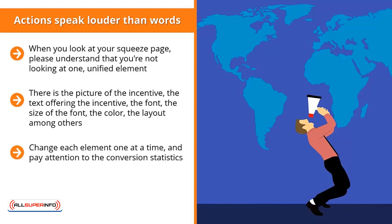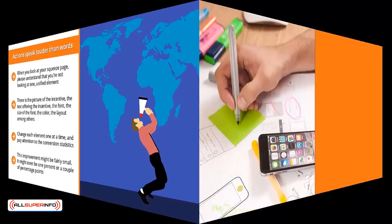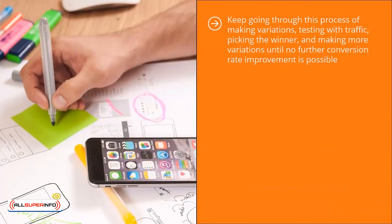Make many different variations and then test these variations against your traffic. You should quickly see that at least one variation has a higher conversion rate than others. The improvement might be fairly small — maybe one percent or a couple of percentage points — but that's okay. Isolate that variation, make more variations of it, run traffic through all the variations, and see if you can improve your conversion rate. Keep going through this process of making variations, testing with traffic, picking the winner, and making more variations until no further conversion rate improvement is possible.